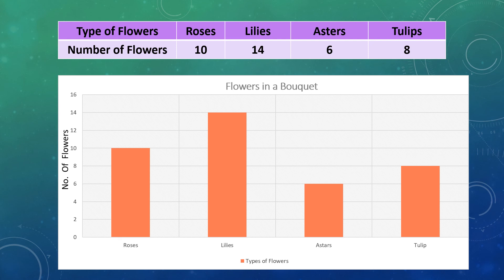Here, we can see there are 10 roses in the bouquet of flowers. So, we will draw a bar that reaches up to the height of scale 10. Same way, we will draw a bar for lilies that reaches up to the height of scale 14. For asters, draw a bar that reaches up to the height of scale 6.